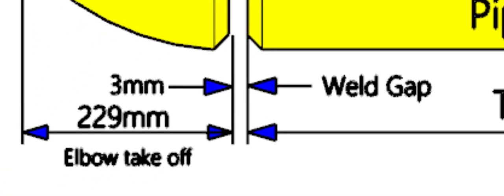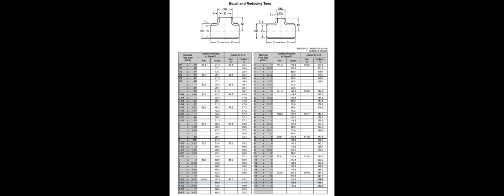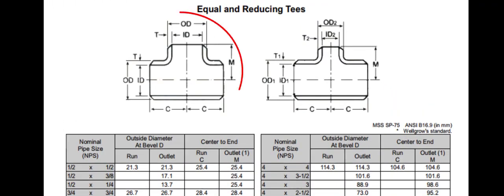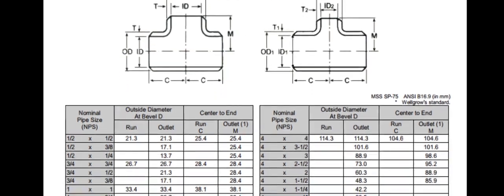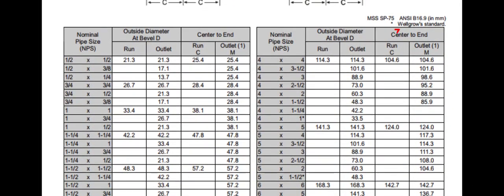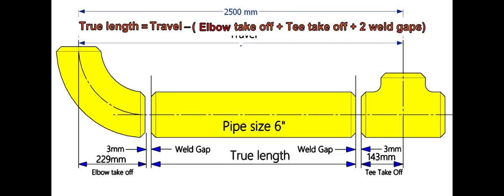Let us check the takeoff length of the tee in the chart. In the equal tee section, check the dimension of six inches and in column C. 142.7, let us take it as 143 millimeters.